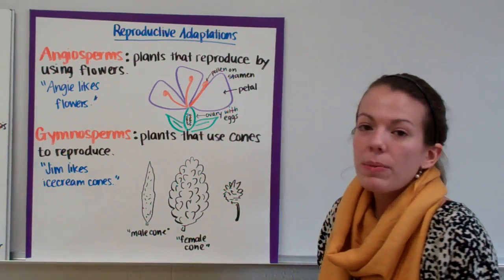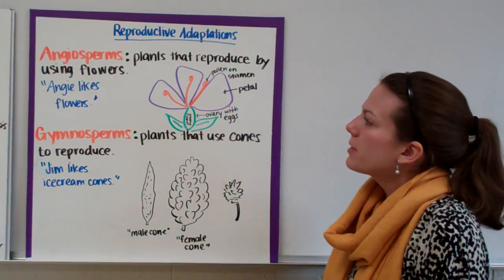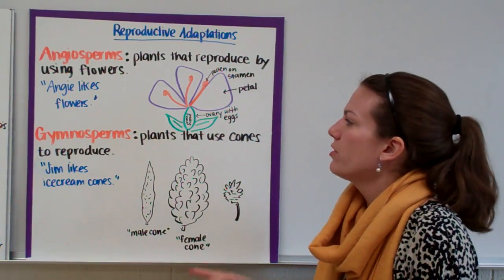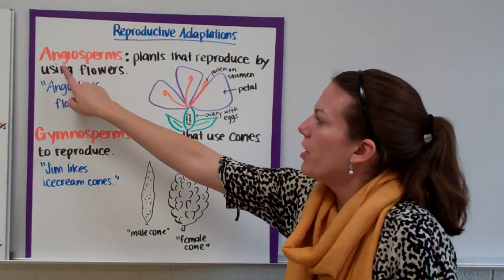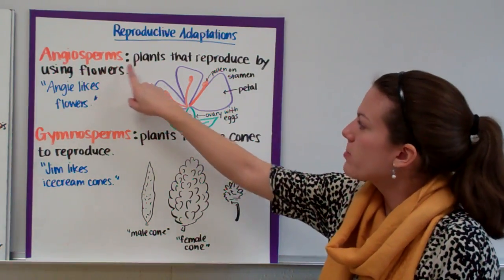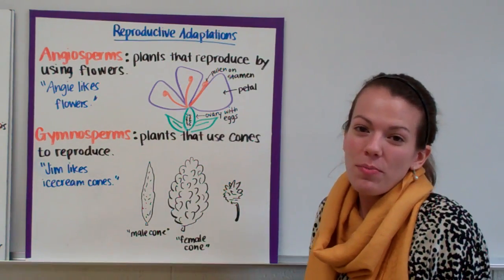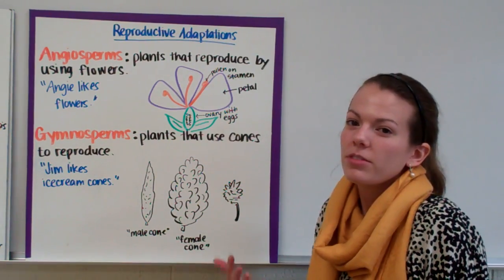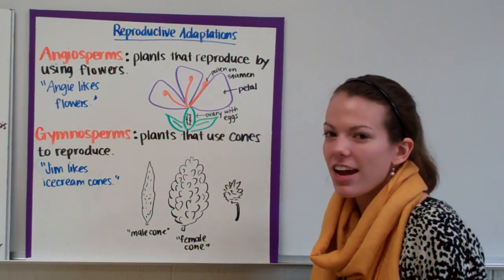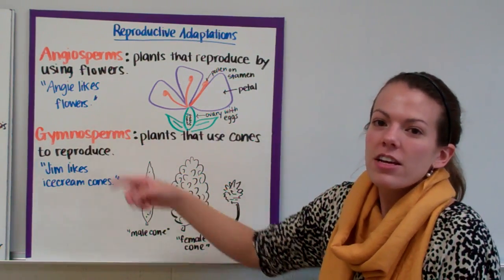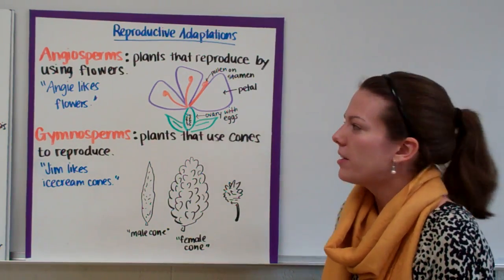Now for reproductive adaptations of plants. Now we have two major reproductive adaptations. We have flowers and cones. Our flowering plants are called angiosperms. So angiosperms are plants that reproduce by using flowers. Now a way that we remember that angiosperms are flowering plants is Angie kind of sounds like a girl's name. So we say Angie likes flowers to help us remember that angiosperms are flowering plants.